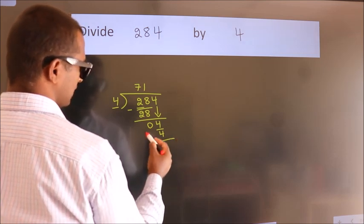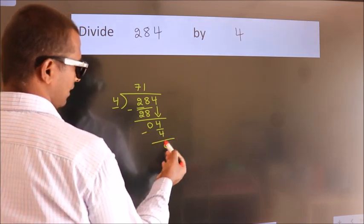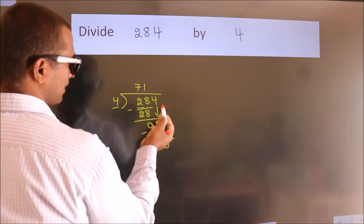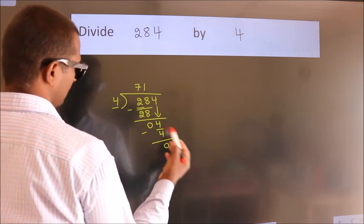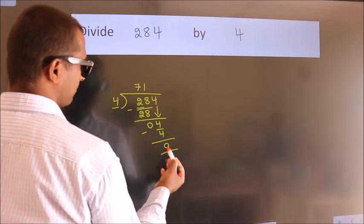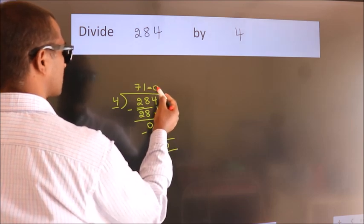Now we subtract, we get 0. After this, no more numbers to bring it down. And we got remainder 0. So this is our quotient.